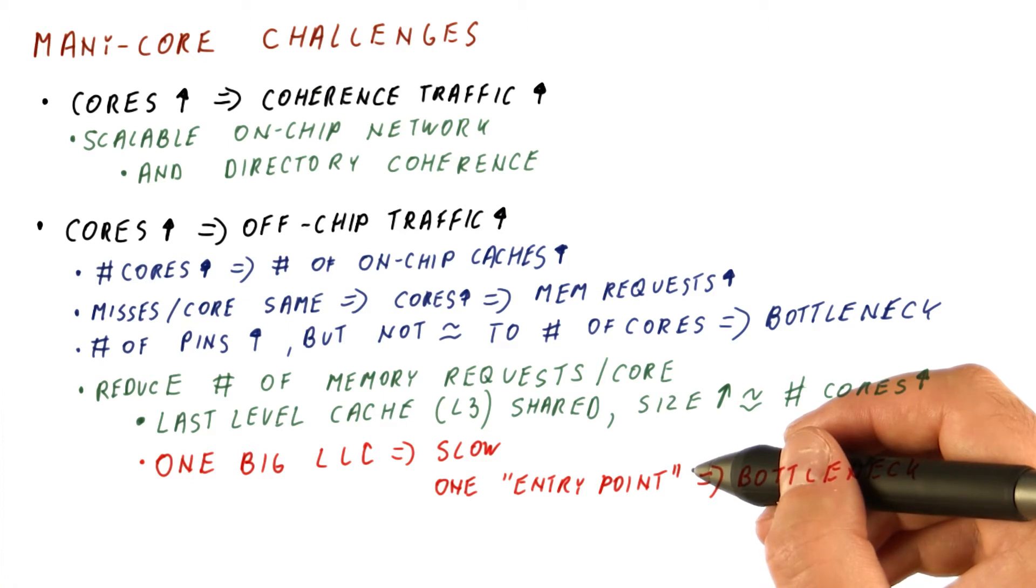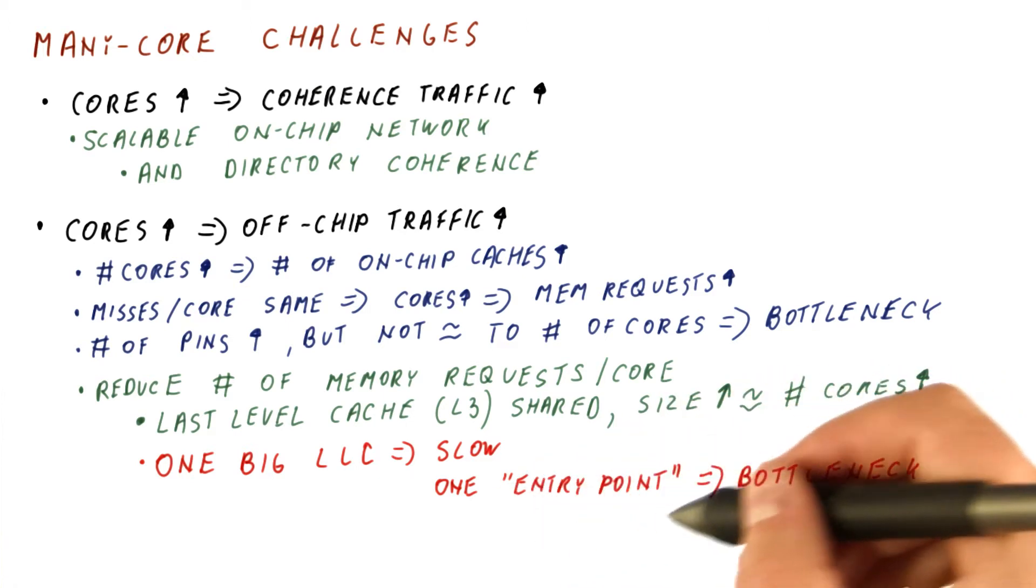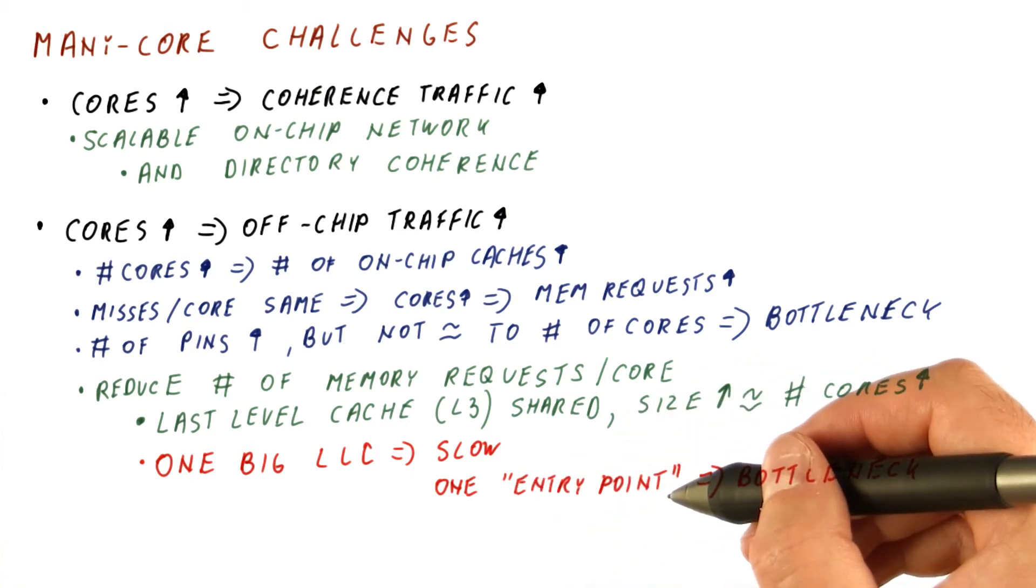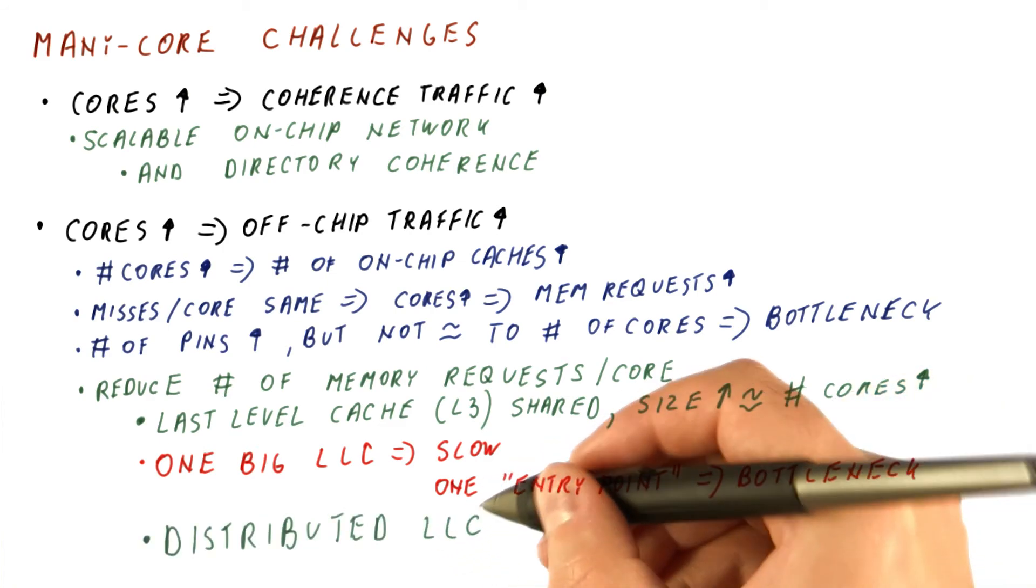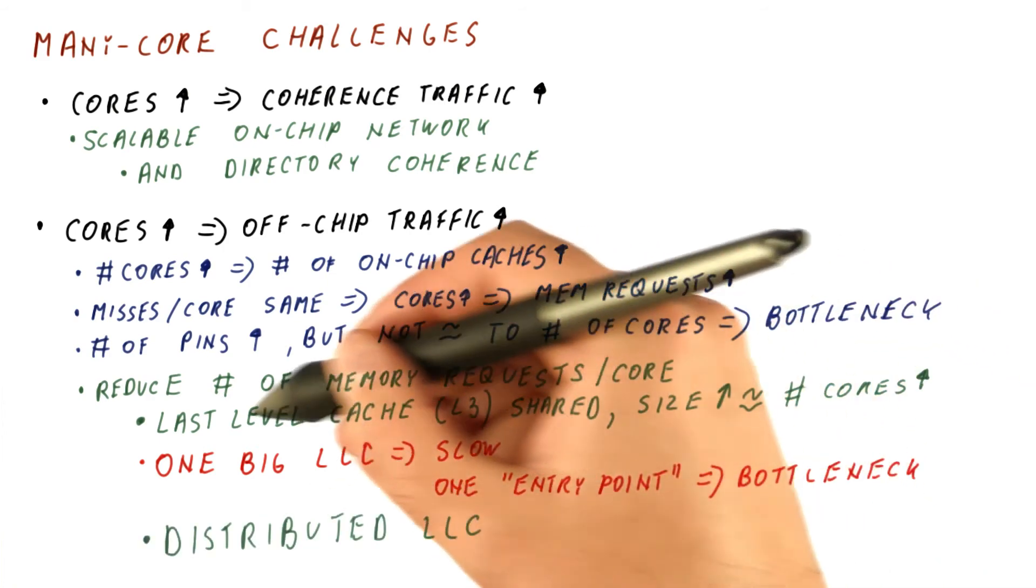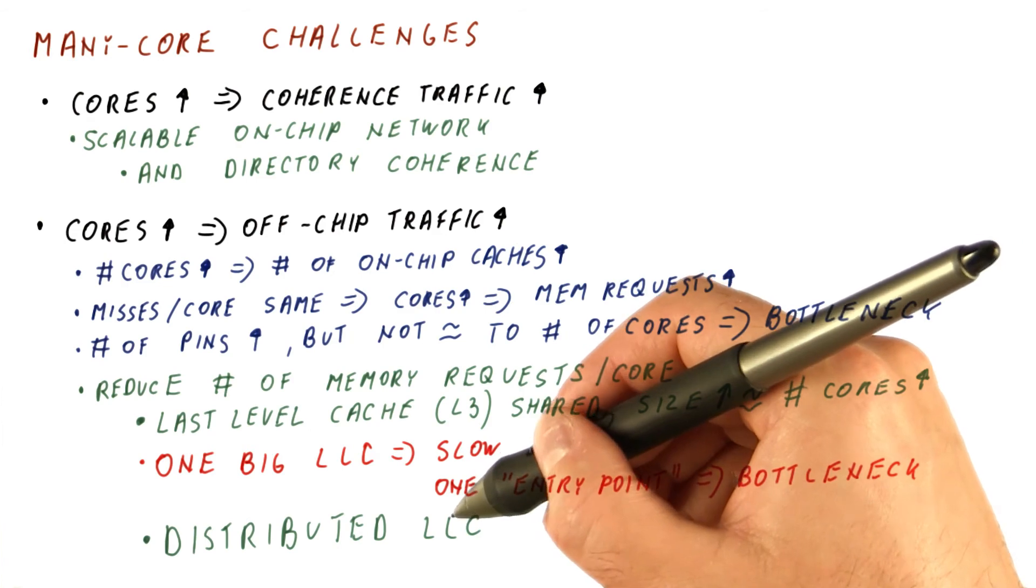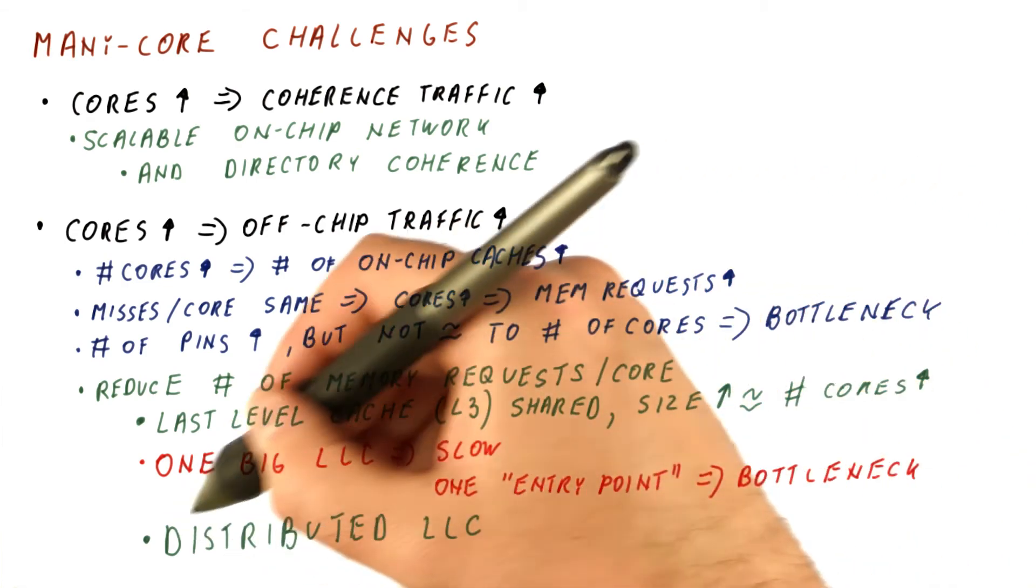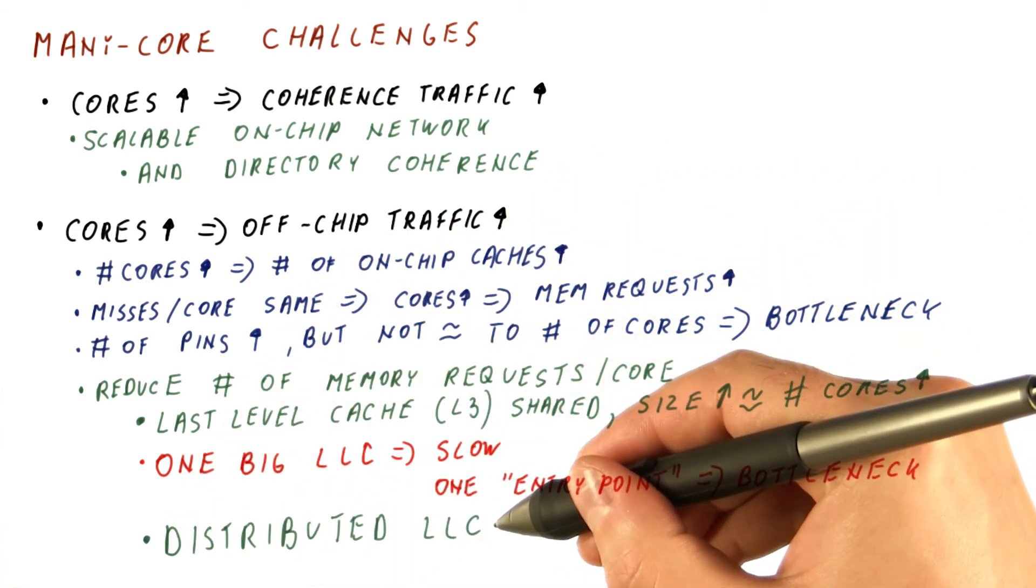If we double the number of cores, then those links around the entry point get double the traffic. So what we do is we don't have just one big last level cache. We have what is called a distributed last level cache. Now let's see what that looks like.